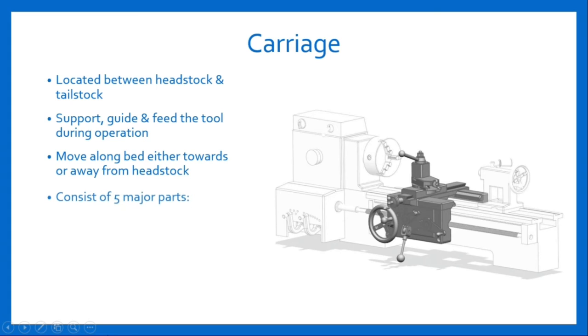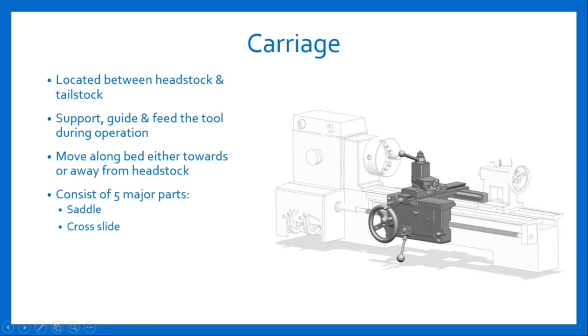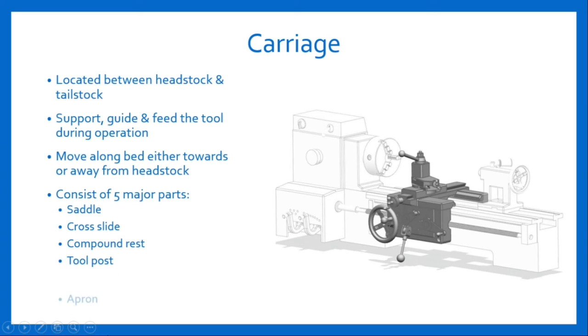It consists of five major parts: saddle, cross slide, compound rest, tool post, and apron.